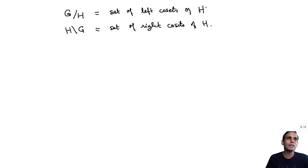So what we know is that G is a disjoint union of its left cosets, and each left coset has the same size as H itself. So the cardinality of G is the number of left cosets times the size of H.